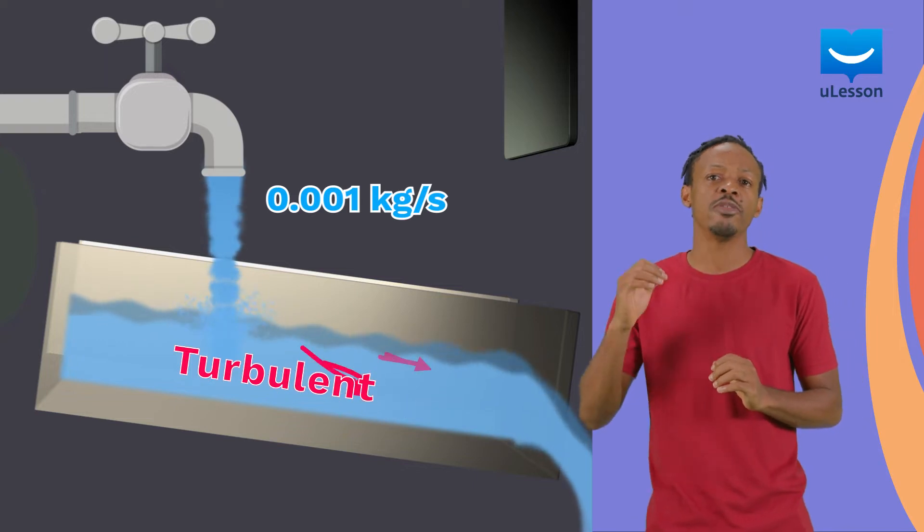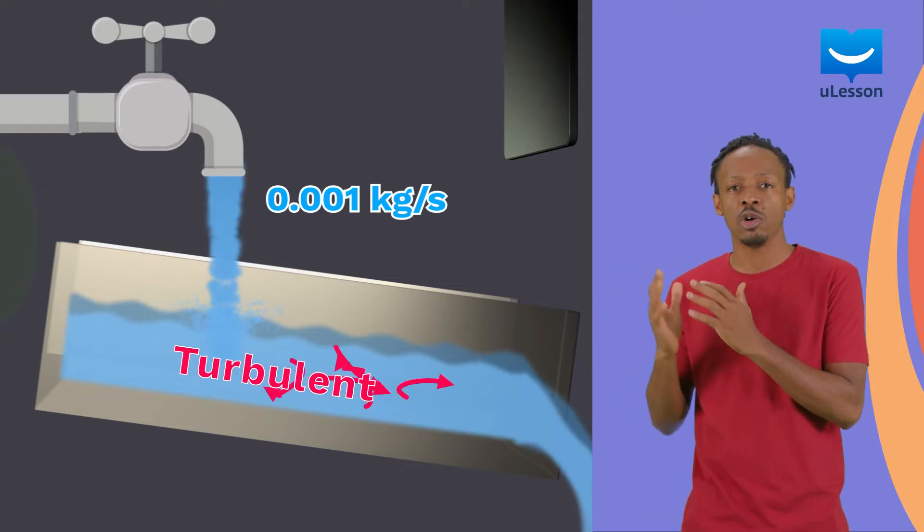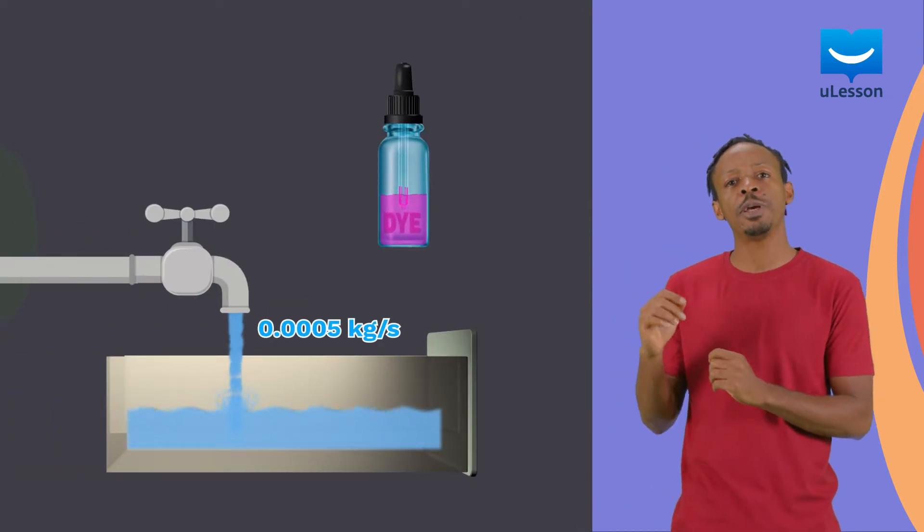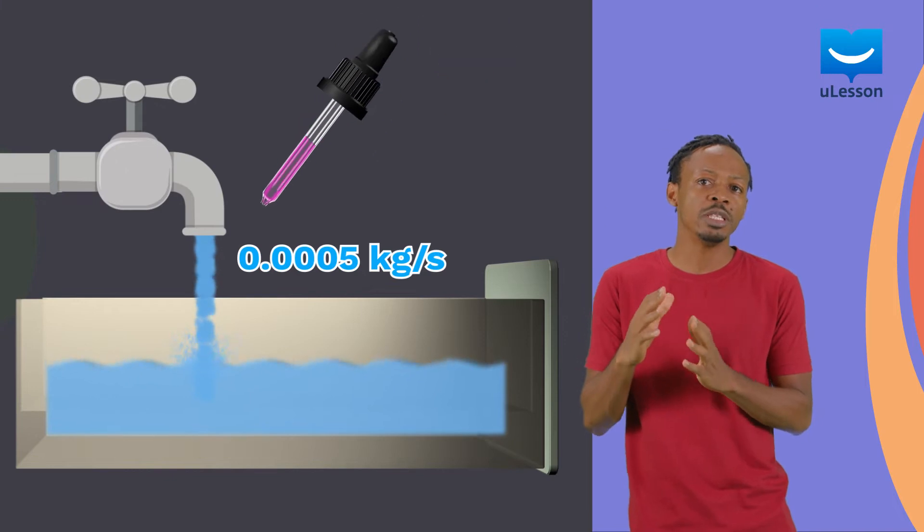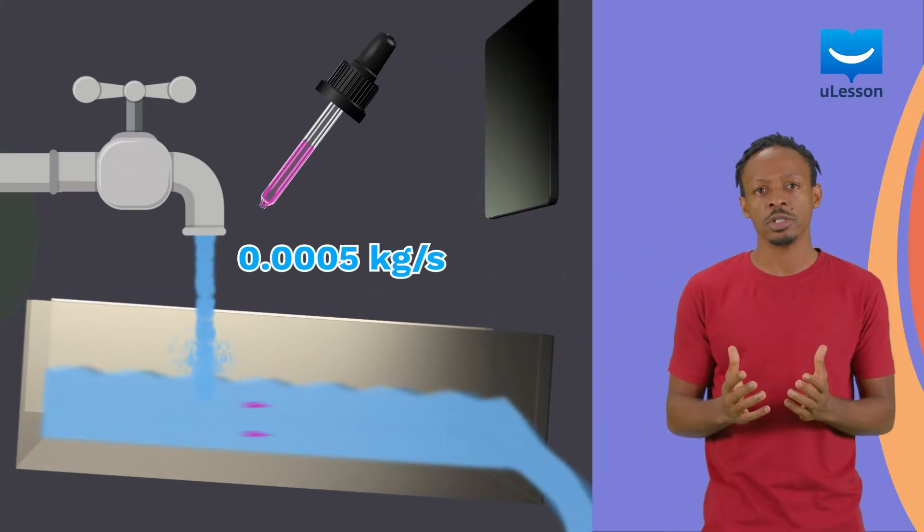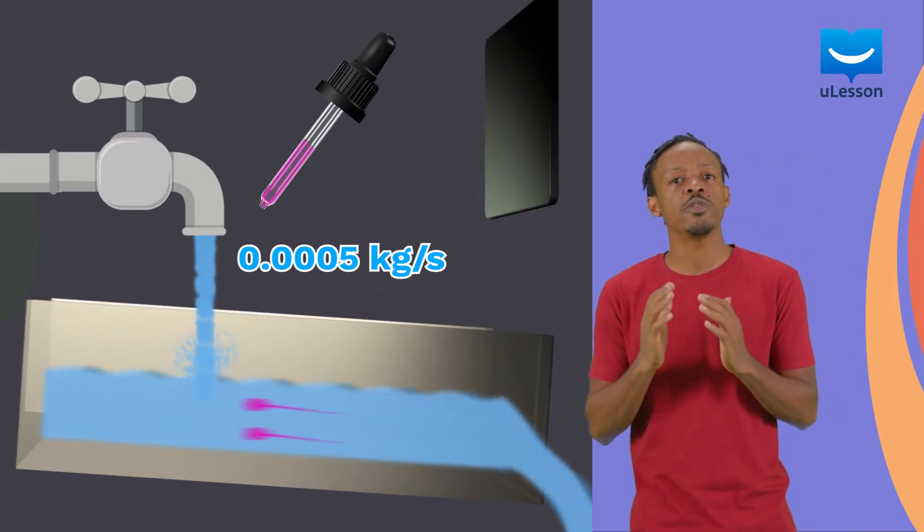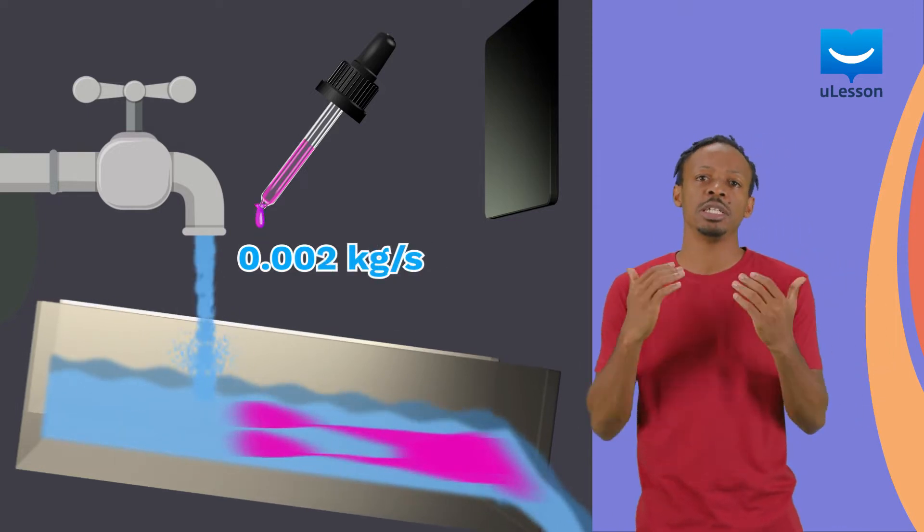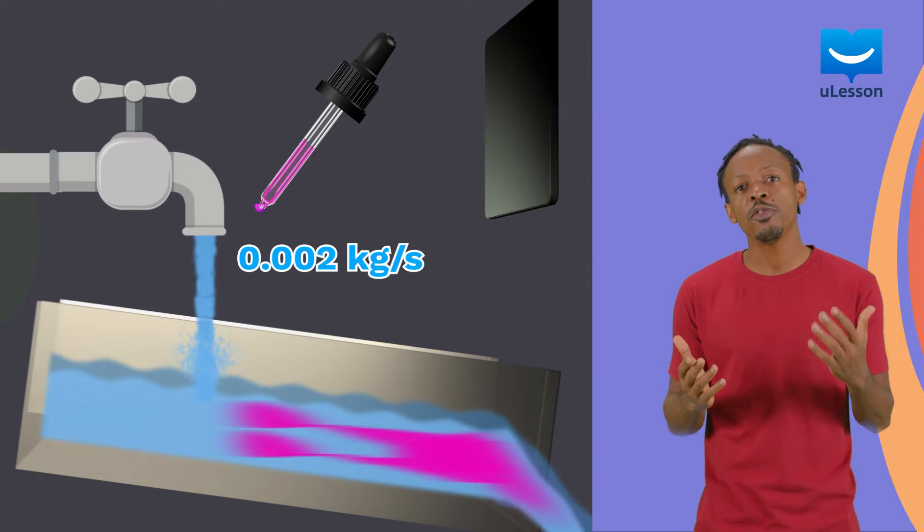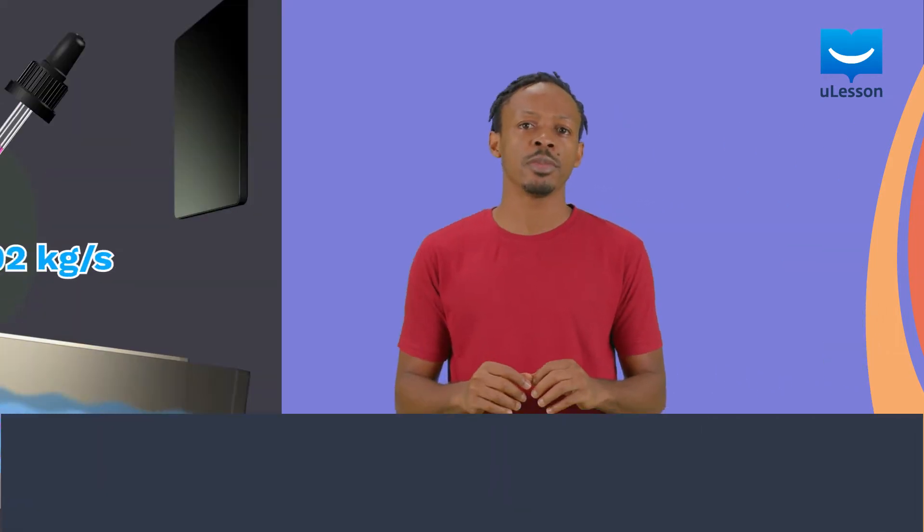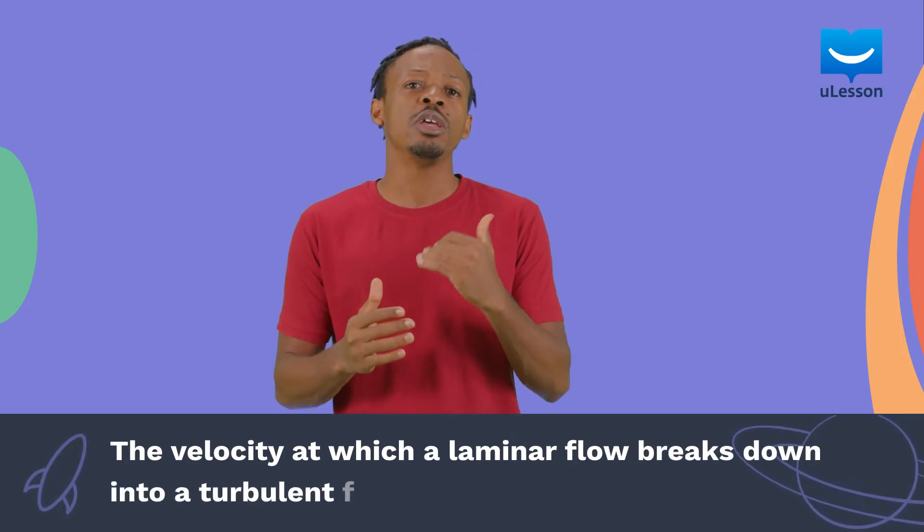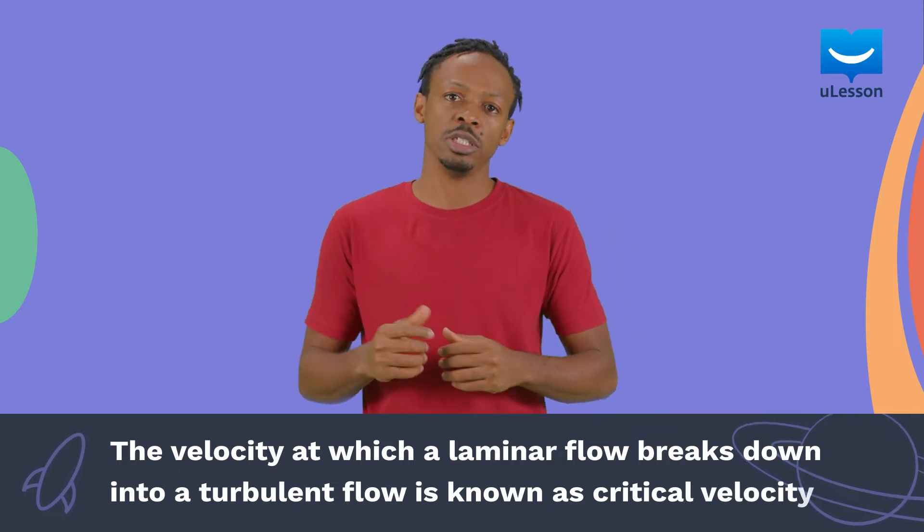Gradually increase the flow rate from the tap and observe. To make the observations easier, fill a pipette with a dye and drop the dye in the water at intervals. The flow remains sufficiently laminar until a particular velocity is exceeded and then the flow becomes turbulent. The velocity at which a laminar flow breaks down into a turbulent flow is known as critical velocity.